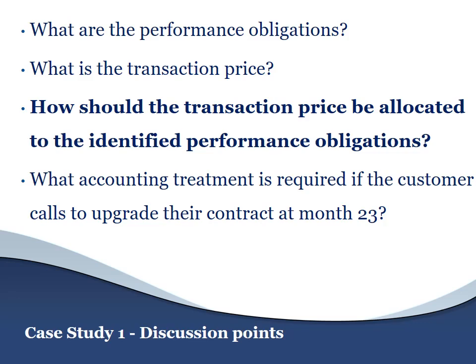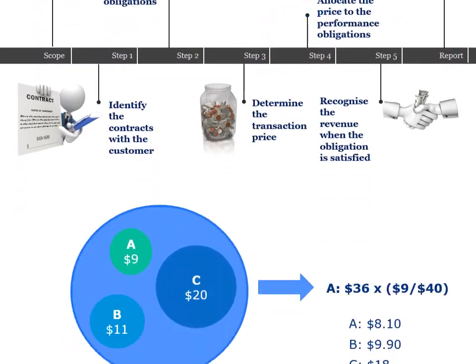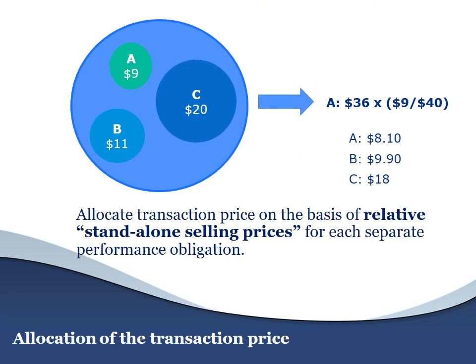The next question is how the transaction price should be allocated to the identified performance obligations, which is step 4. IFRS 15 requires an entity to allocate the transaction price on the basis of relative standalone selling prices for each performance obligation. For example, if three performance obligations A, B, and C have standalone selling prices of $9, $11, and $20 respectively, a customer buying all three would pay $40. If a 10% discount is granted, the customer pays $36. The discount is allocated proportionately: revenue allocated to A is $36 times 9/40 equals $8.10; B is $9.90; and C is $18.